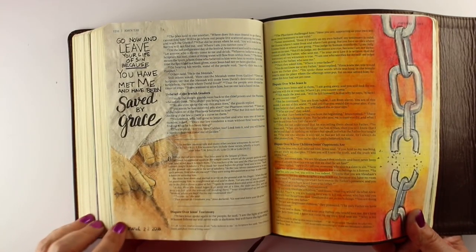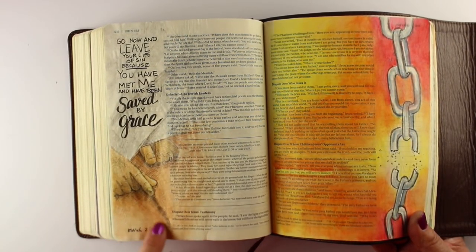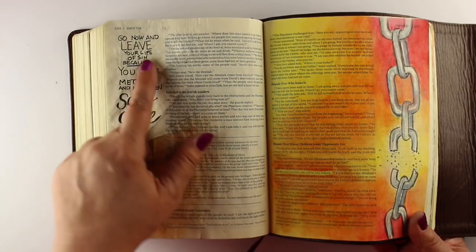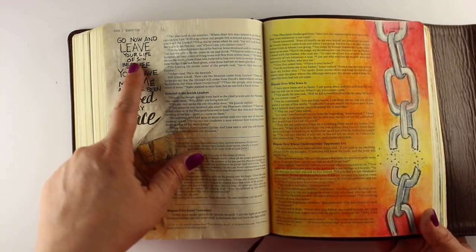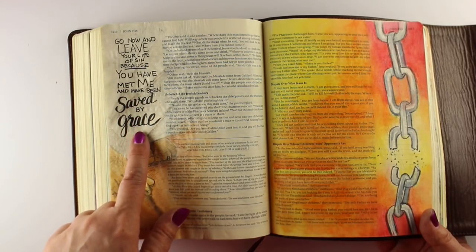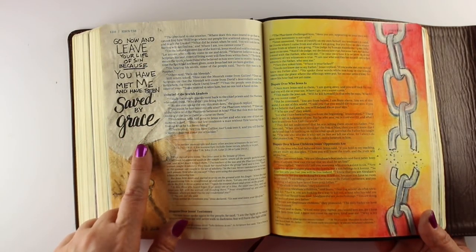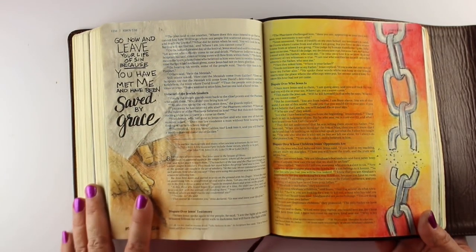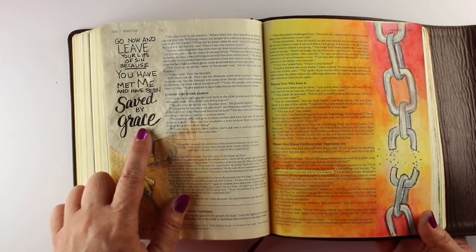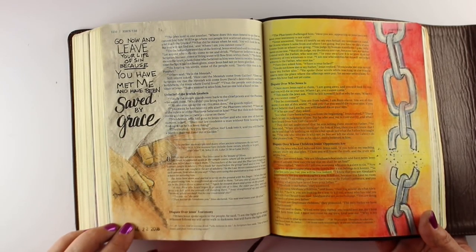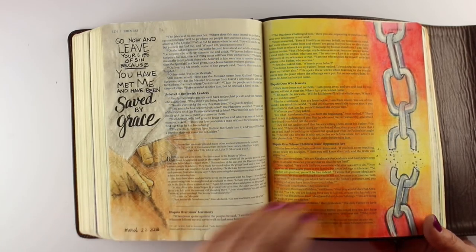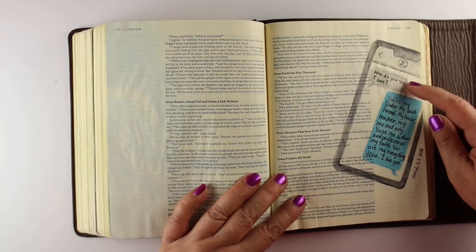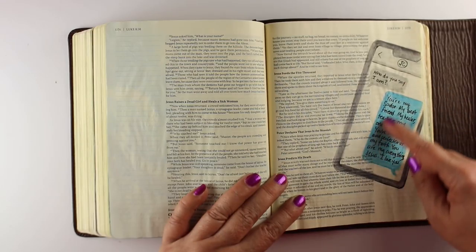Then the adulteress who was ready to be stoned and he was writing in the dirt. In this one, this was kind of a combination of some things in the devotional. Instead of saying go now and keep on sinning, he said go now and leave your life of sin because you've met me and you've been saved by grace. Because the woman was not free to go back to her life of sin, but to celebrate that she was saved from her sin.